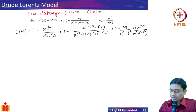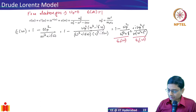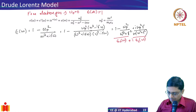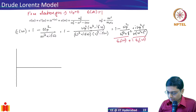So those are the real and imaginary parts of the optical function — epsilon-one of omega is the real part and epsilon-two of omega is the absorption part. Let's understand how this behaves by plotting it on an axis of omega normalized by omega-p.